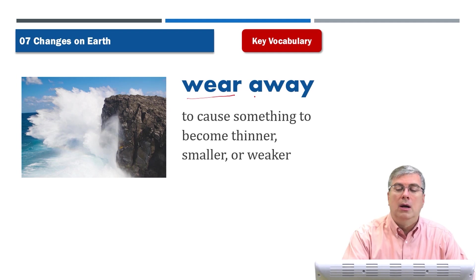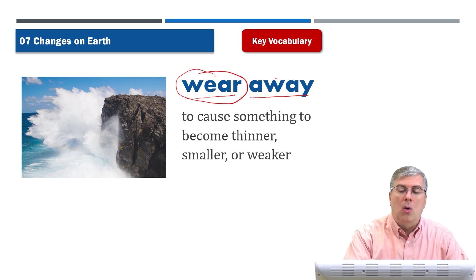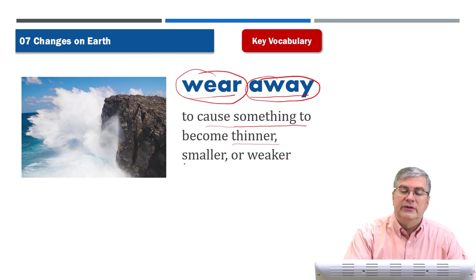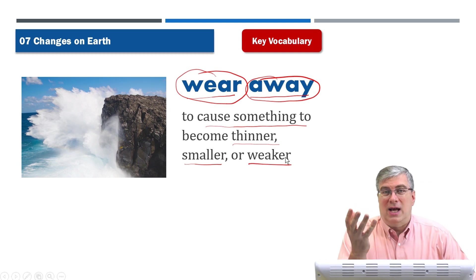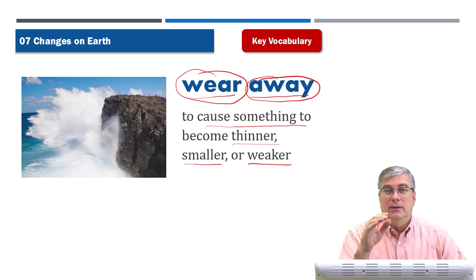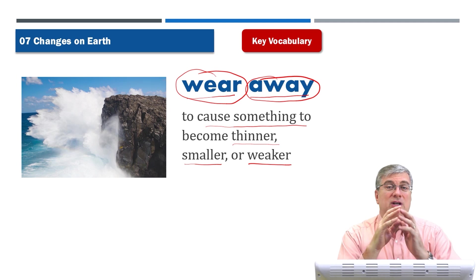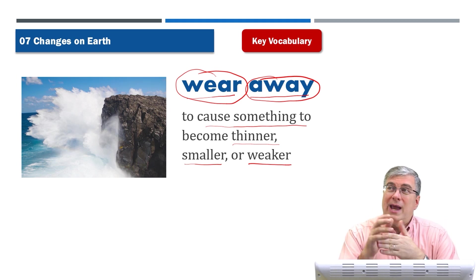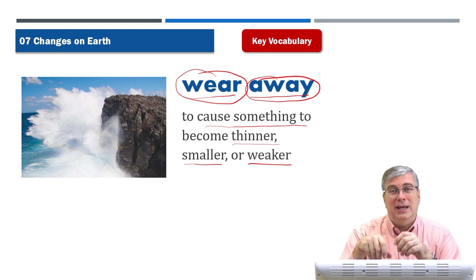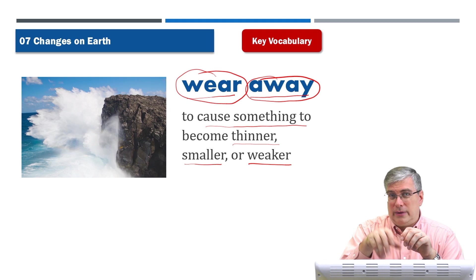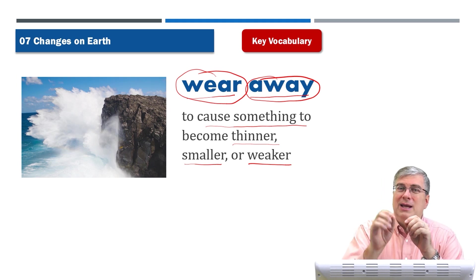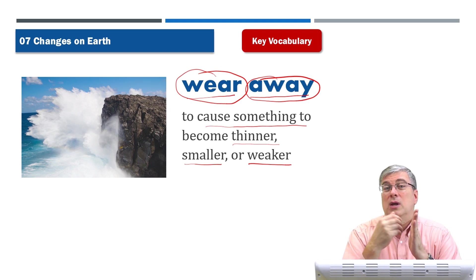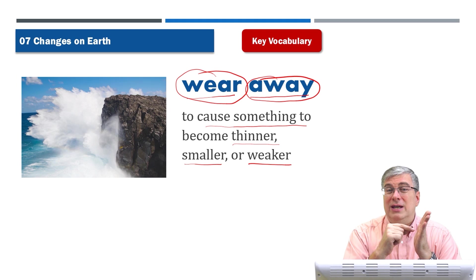Next we have another phrasal verb: 'wear away.' 'Wear' is the verb and 'away' is the preposition. 'Wear away' means to cause something to become thinner, smaller, or weaker over time. For example, a toy with a shiny new paint job — over time, as it gets wet or rubs against walls and carpet, the paint wears away, becoming thinner and weaker, until you can see the metal underneath.